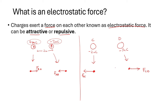These free body diagrams are very helpful because if there is attraction, you know the arrows of both free body diagrams are pointing towards each other. And if they are repelling, the arrows are pushing away from each other. So with unlike charges it is a pulling force, whereas with like charges it is a pushing force.